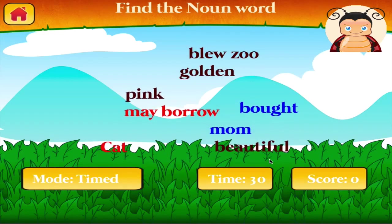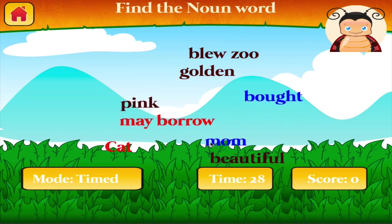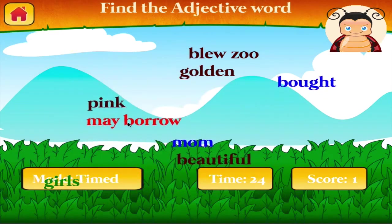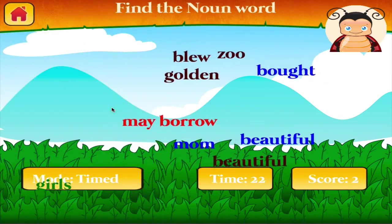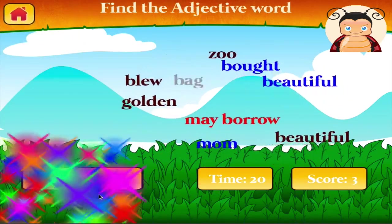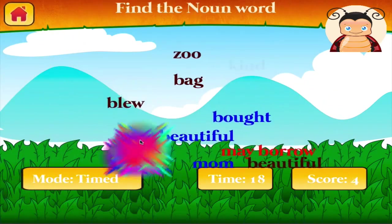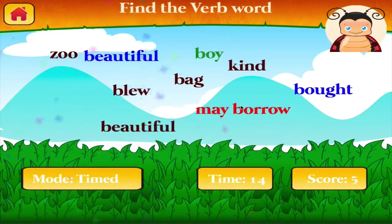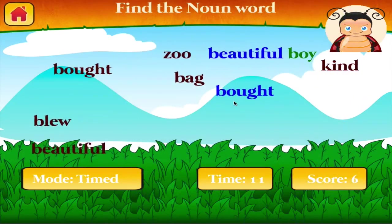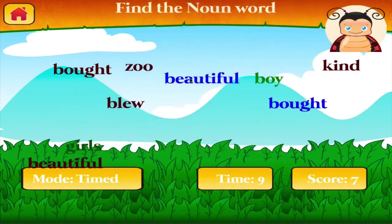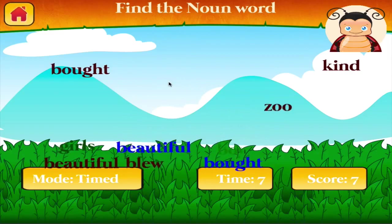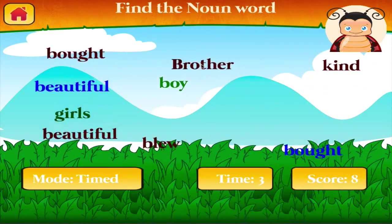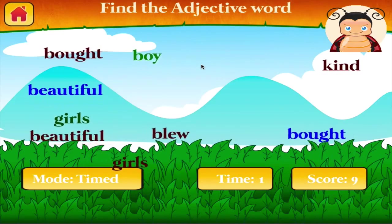Find the noun word. Find the adjective word. Find the noun word. Find the adjective word. Find the noun word. Find the verb word. Find the noun word. Find the noun word. Find the noun word.